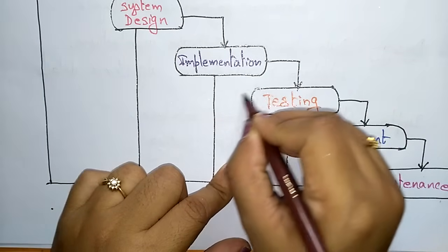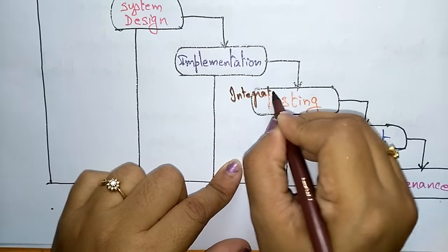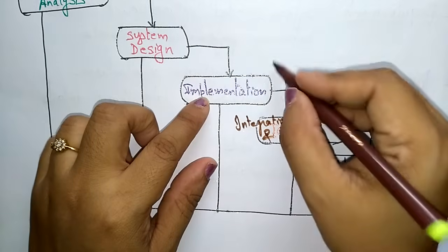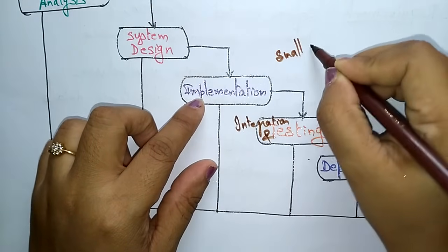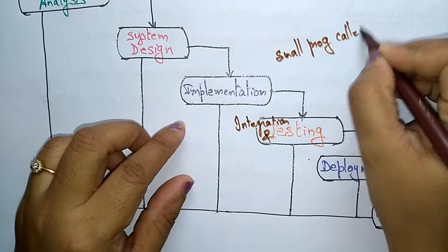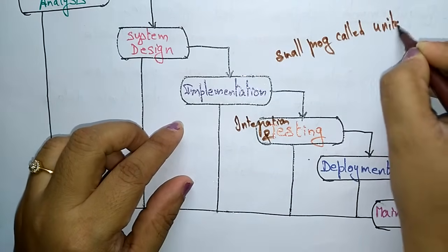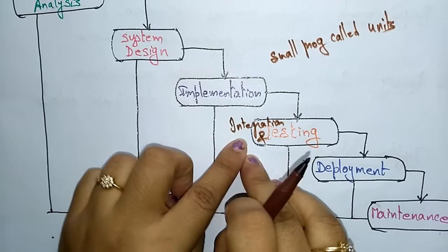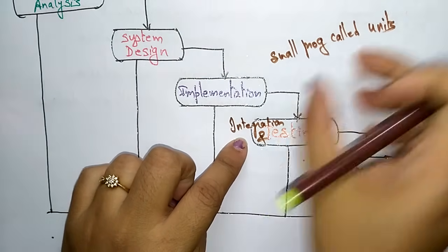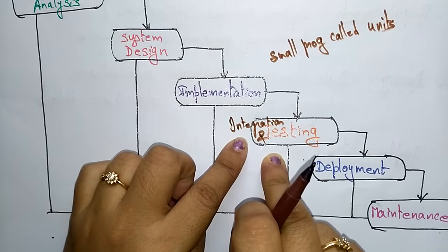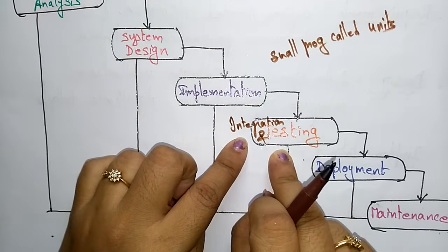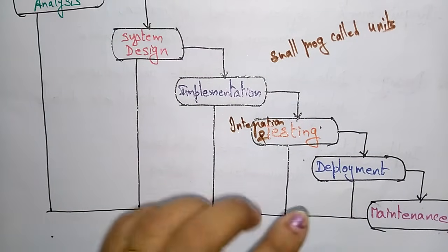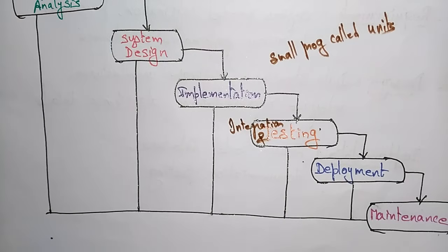The next phase is integration and testing. After unit testing, all units are combined — that process is called integration. All units are integrated and the complete product is tested for any faults and failures in this phase.